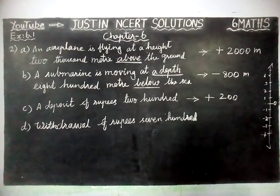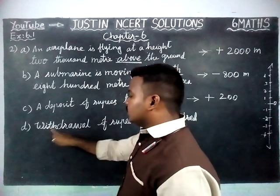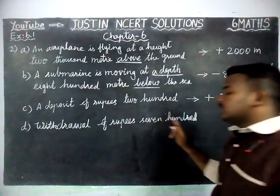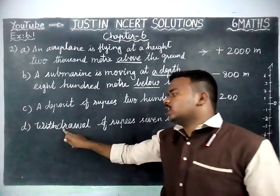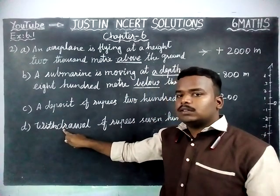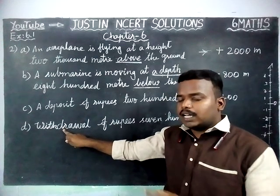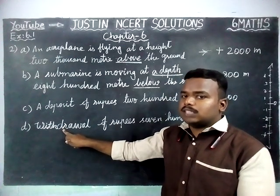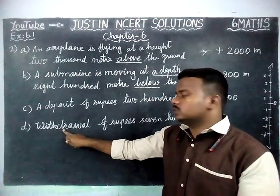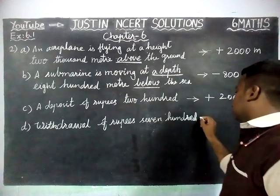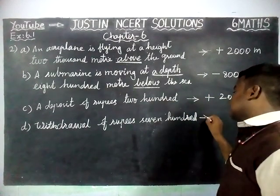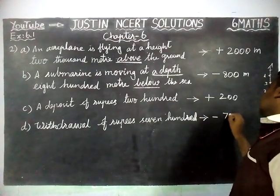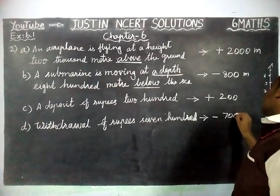Part D: withdrawal of rupees 700. When we are withdrawing an amount, that amount is subtracted from our savings. So withdrawal means the amount is subtracted, giving us minus 700 rupees.